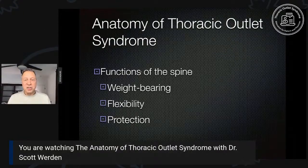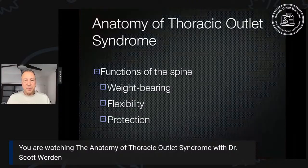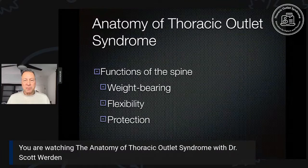If we can understand some of the underlying principles of the spine and the disease of the spine, we'll have a better grasp on thoracic outlet syndrome and its mechanisms. Here's a simple way to break down the functions of the spine. The first is weight bearing. The second is flexibility. And the third is protecting delicate nerves and spinal cord. We'll go through each of these in turn.